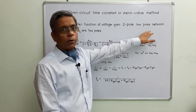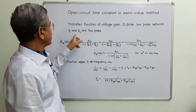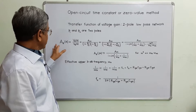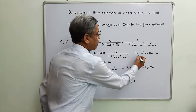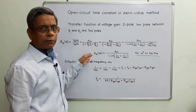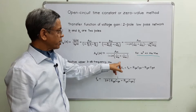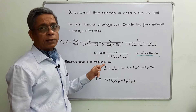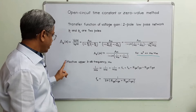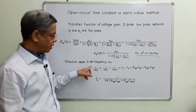We start with the transfer function of voltage gain for a two-pole low pass network of second order, because we have two internal capacitors CGS and CGD corresponding to poles P1 and P2. Writing the transfer function in the S domain, and considering the inequality that one pole dominates, we get a very simplified version of the transfer function, which shows a low pass network of first order with only a single power term.